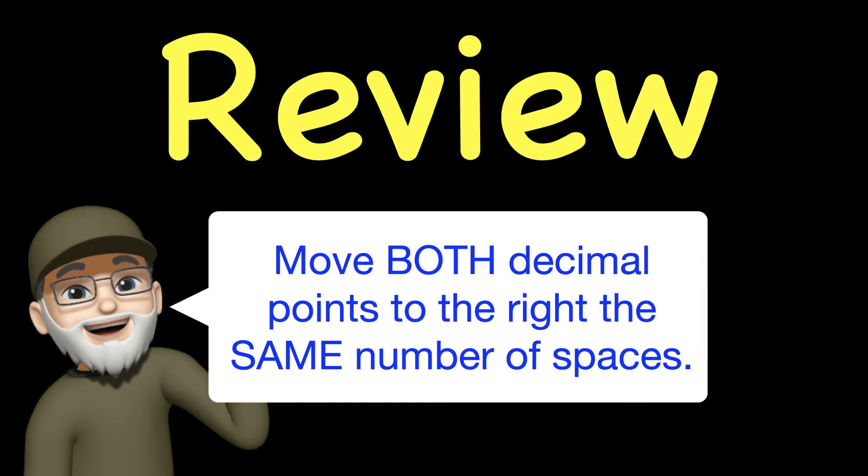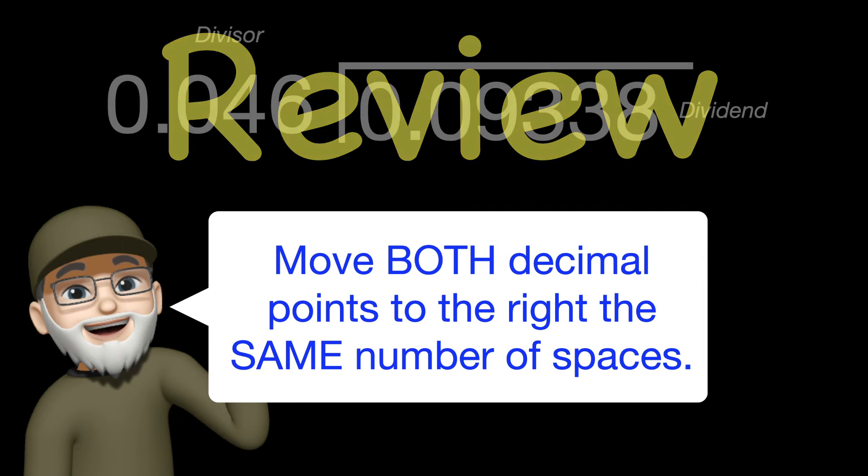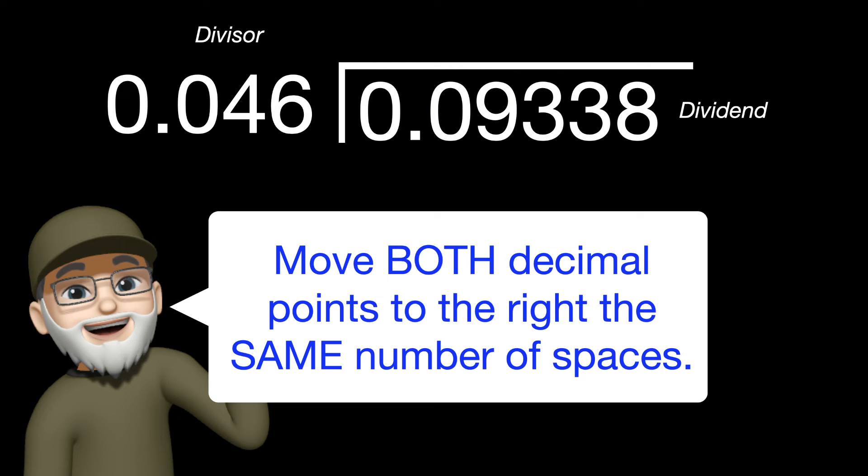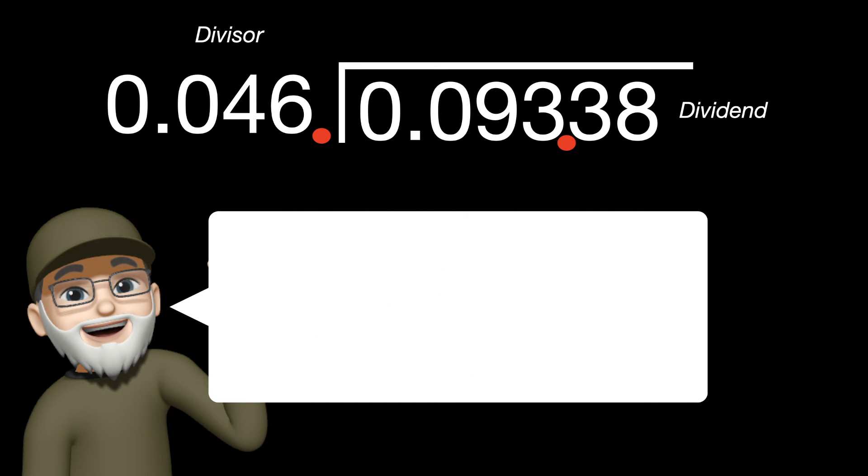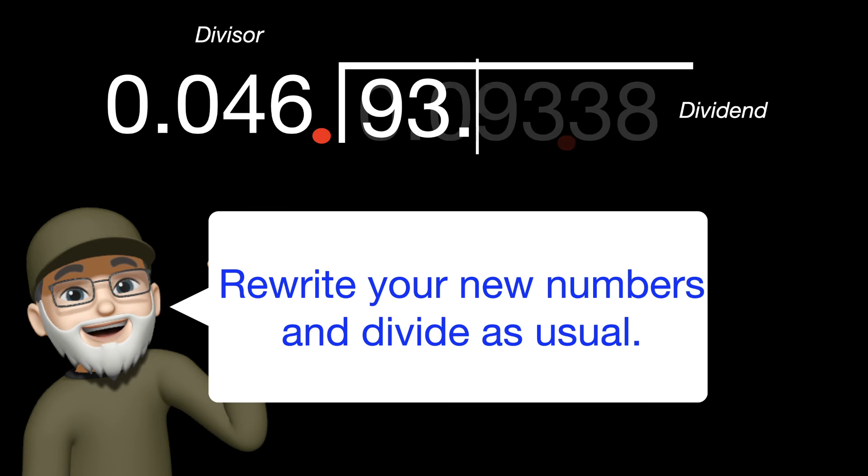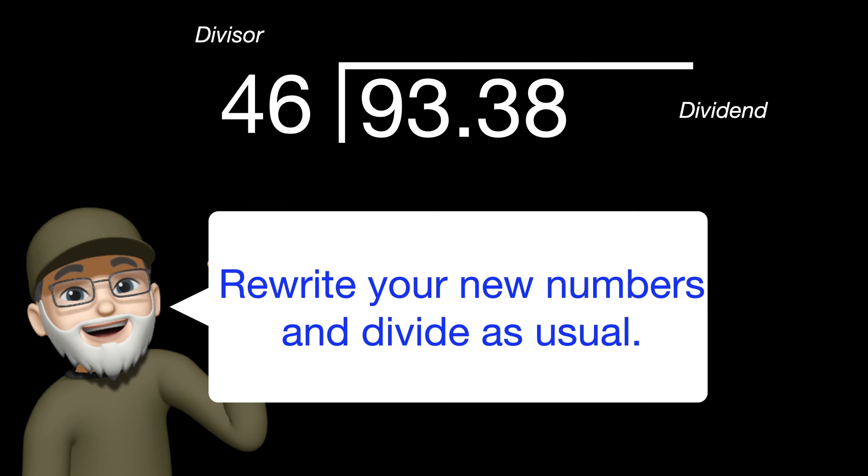All right, let's review. The main point for today's lesson is just when you have problems like this, move both of your decimal points over to the right the same number of spaces. Then rewrite your new numbers for divisor and dividend and divide as normal.